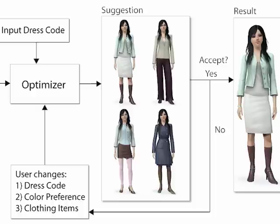The users can select from the suggested outfits or can modify the optimization criteria, for example by changing the dress code, enforcing particular clothing items, or changing the color preference. The system will then update the outfits accordingly. The optimization objective function consists of three components: the style cost, color rating cost, and color palette cost.